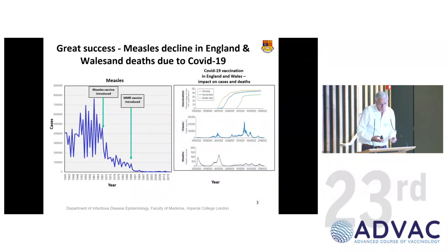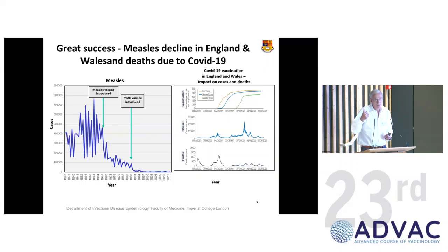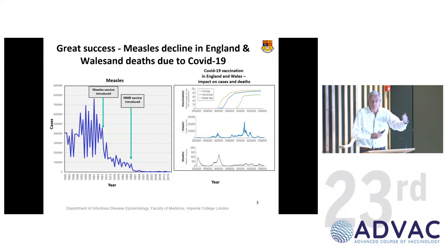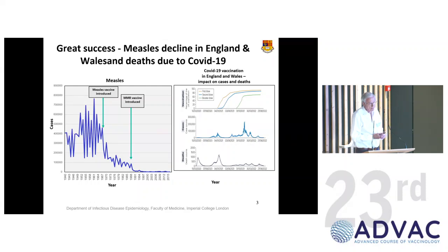We should always remind ourselves how successful vaccination has been. When medical historians look back on the past century, probably three things have really altered human life expectancy: antibiotics, statins and blood pressure control, and vaccination — which is hugely important because it acts early in life and gives you a lot of years of life gained. The first classic example is measles immunization.